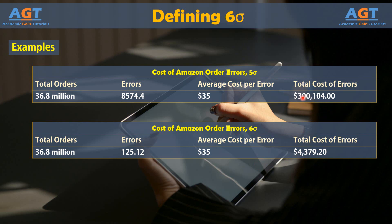For this example, the cost difference in Sigma levels is still over $295,000 for the Cyber Monday business alone. For most organizations, Six Sigma processes are a constant target. Achieving and maintaining Six Sigma perfection is difficult and requires continuous process improvement, but even advancing from lower levels of Sigma to a Four or Five Sigma process has a drastic impact on costs and customer satisfaction.